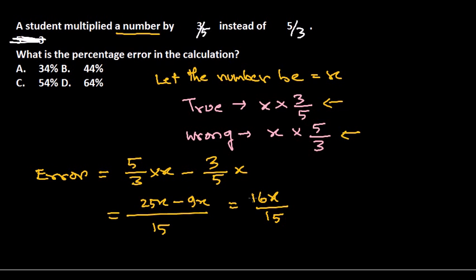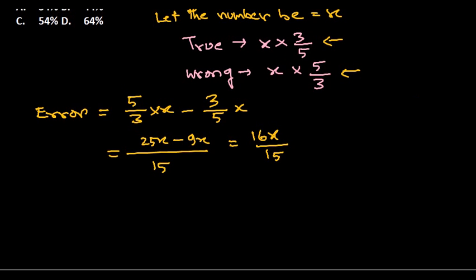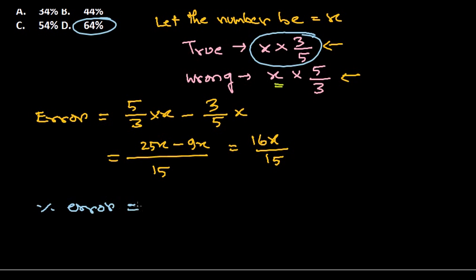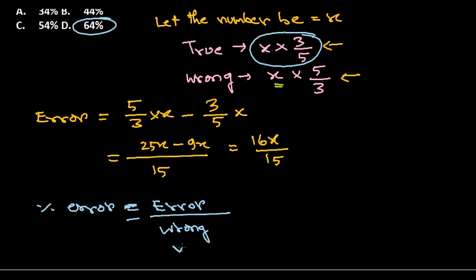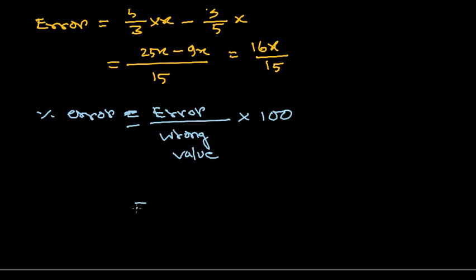Now we need to calculate the percentage of error. Here's the unique thing about this problem — the formula for percentage error is: the error divided by the wrong value (the erroneous value entered), multiplied by 100. That's how you calculate the error percentage.